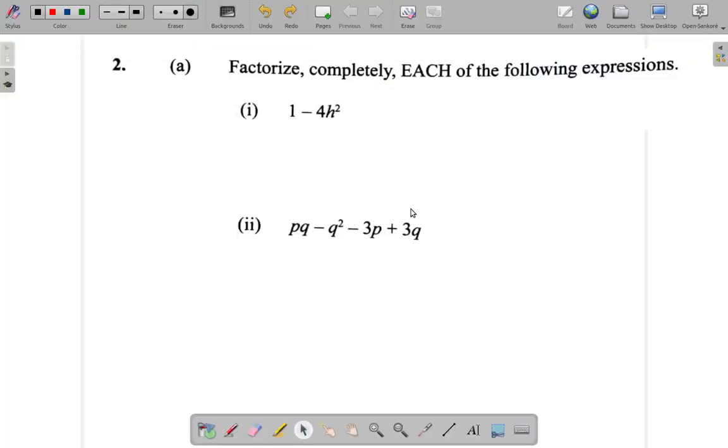Question 2a says factorize completely each of the following expressions. First you have 1-4h squared.